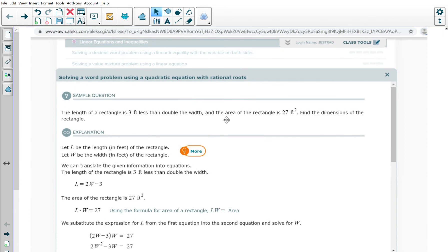In this topic we are solving a word problem using a quadratic equation with rational roots. The length of a rectangle is three feet less than double the width, so I'm going to make a picture.